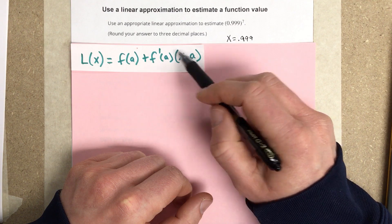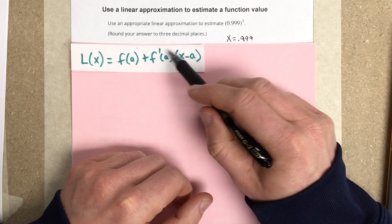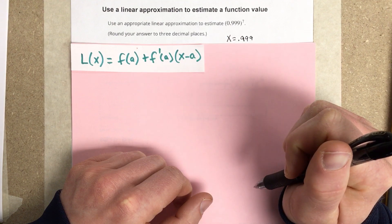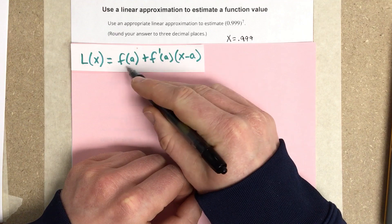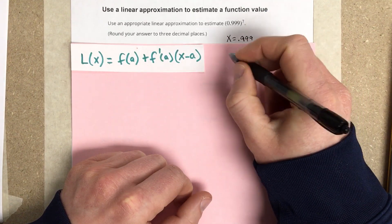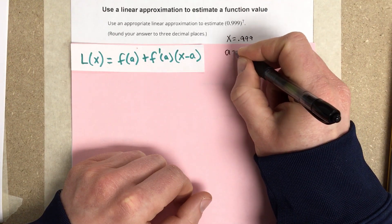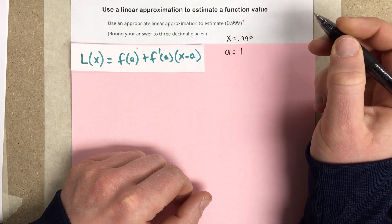So this is basically the tangent line written in a general form from point-slope form. But they give us this f of a, and they tell us to pick an a value. So we're going to say that a is equal to something close to that, which I'm going to say a is equal to 1.